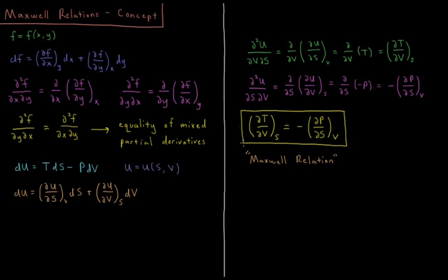This type of relationship, which comes from the structure of the thermodynamic energy function, is called a Maxwell relation. Each individual thermodynamic energy function has its own Maxwell relation. There will be one for internal energy, enthalpy, Helmholtz energy, and Gibbs energy, and those will all be summarized in our next video.